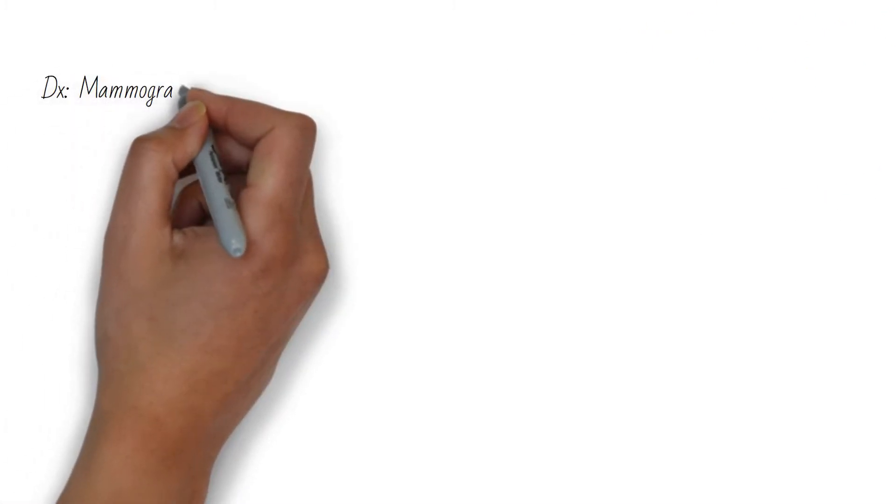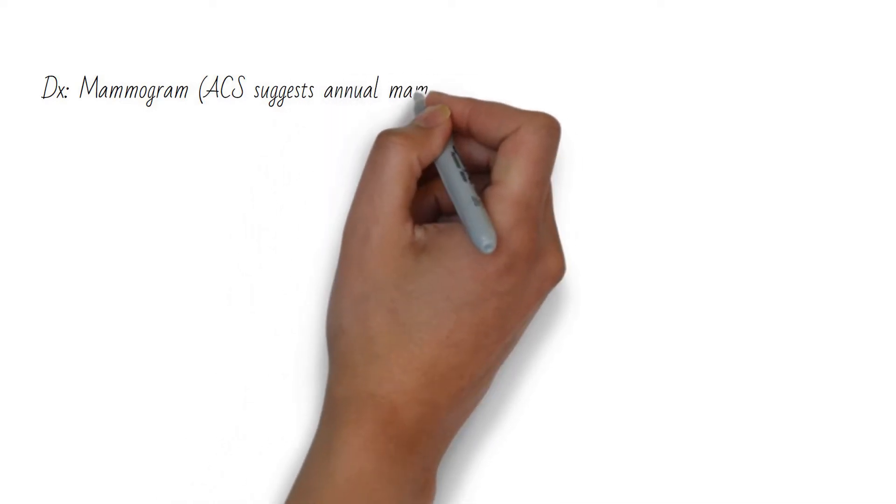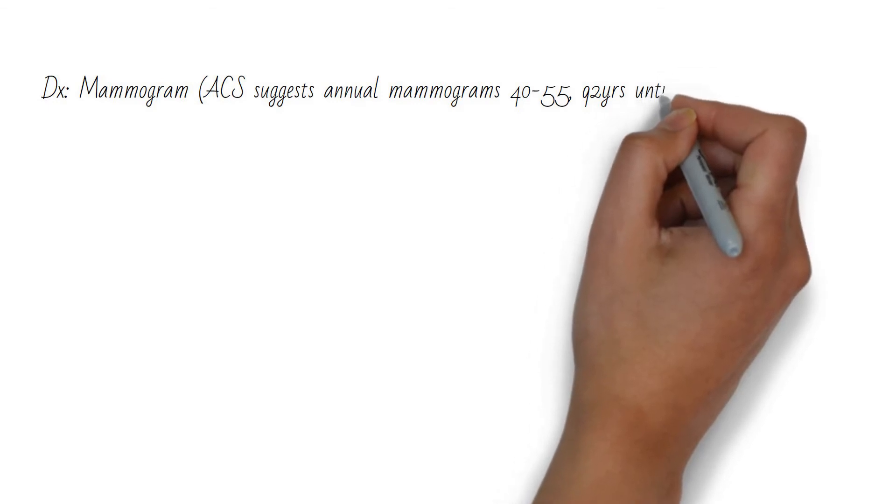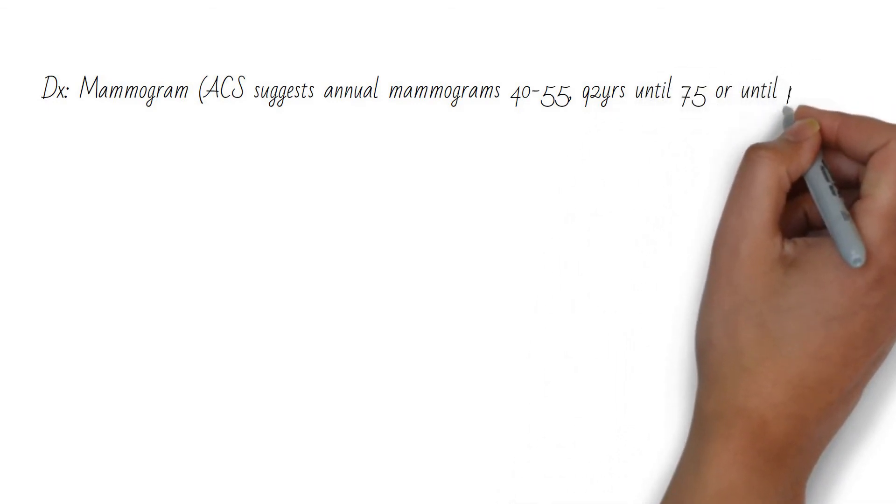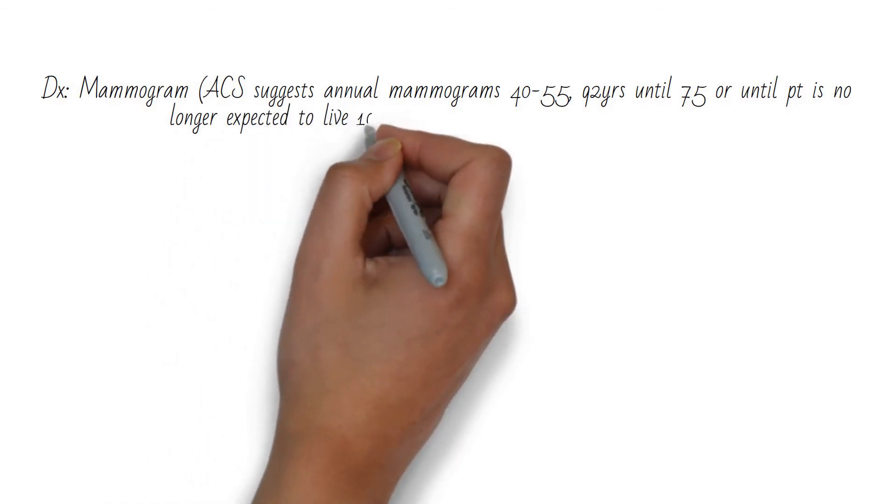Diagnosis usually starts with a mammogram. Guidelines vary, but the American Cancer Society suggests annual mammograms from age 40 to 55 and then every two years until age 75 or until the patient is no longer expected to live another healthy 10 years.